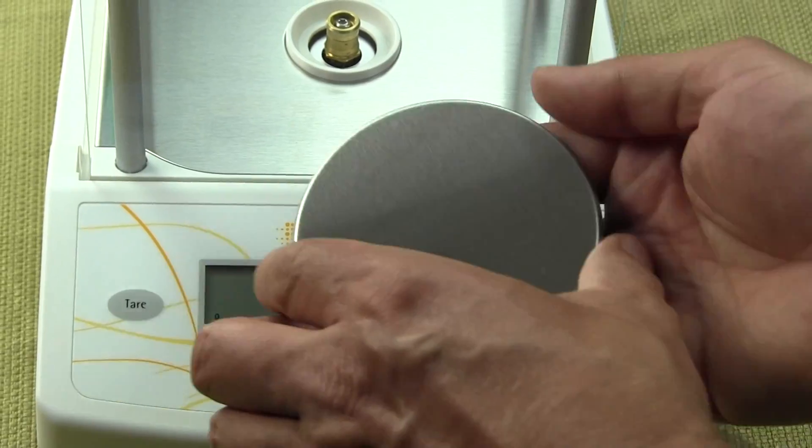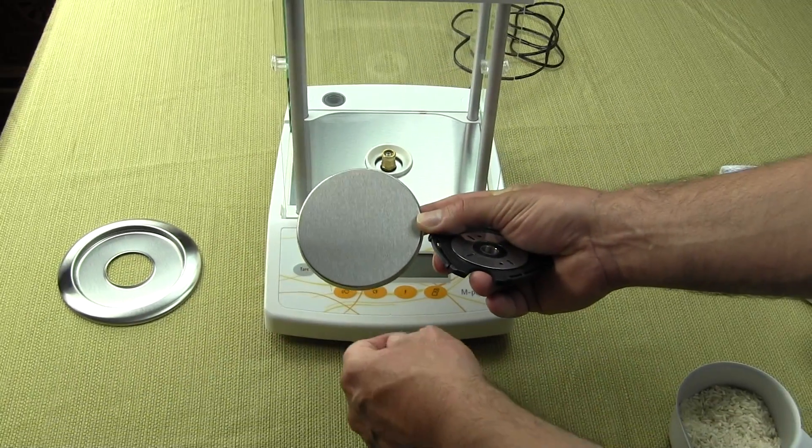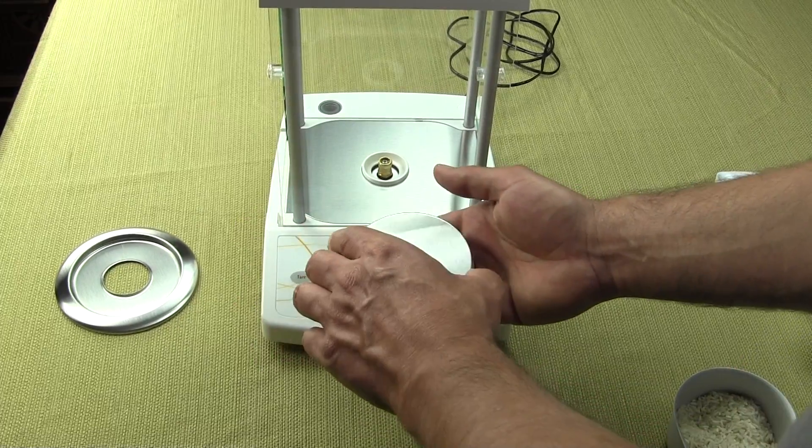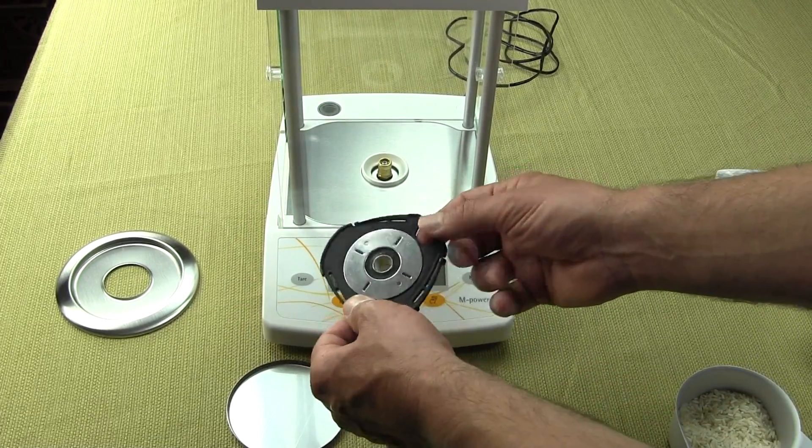On Sartorius' other balances, the weigh pan would be much larger. This is a round three and a half inch diameter platform. You can see you have the weigh platform and this is the pan support.